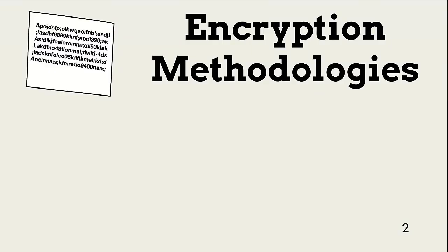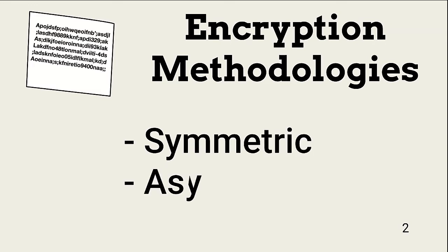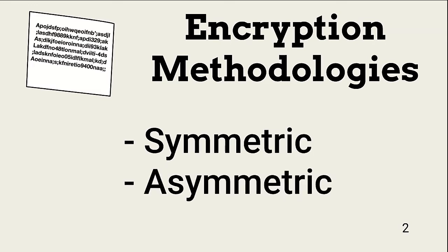One of the best ways to protect data at rest and in motion is via encryption. The two general types of encryption are symmetric and asymmetric. We take a high-level look into how these work in the next slides.